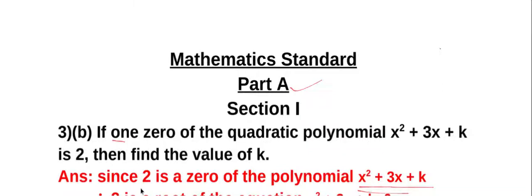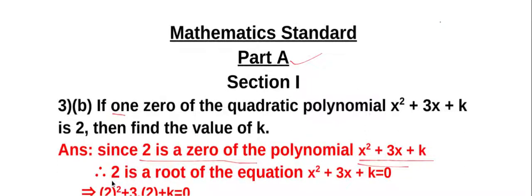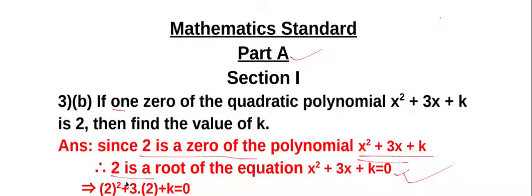Since 2 is a zero of the polynomial, we know that 2 is a root of the equation x² + 3x + k = 0. So we put x equal to 2 in that equation.